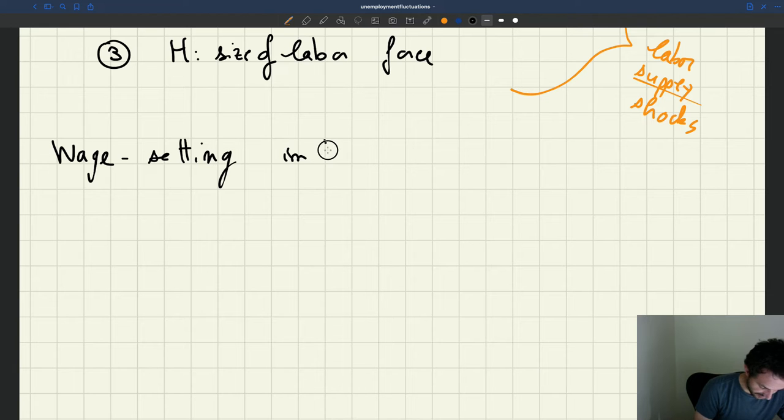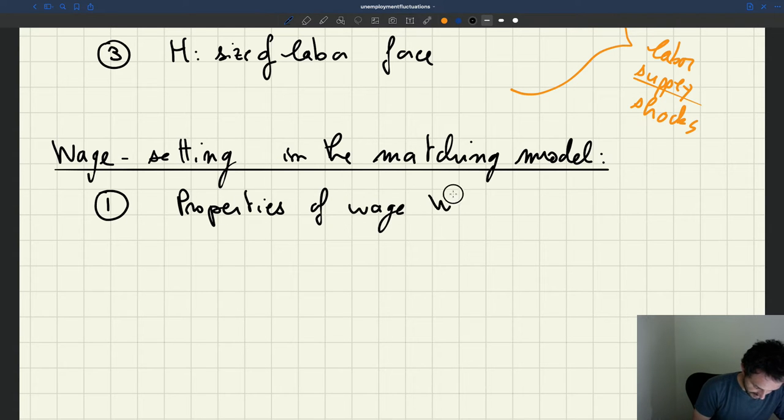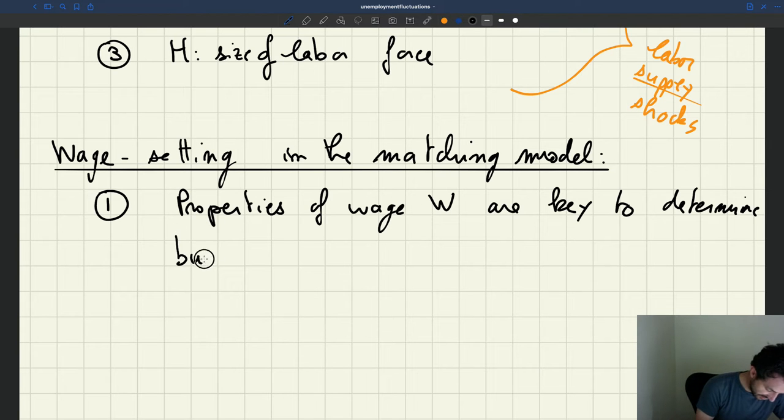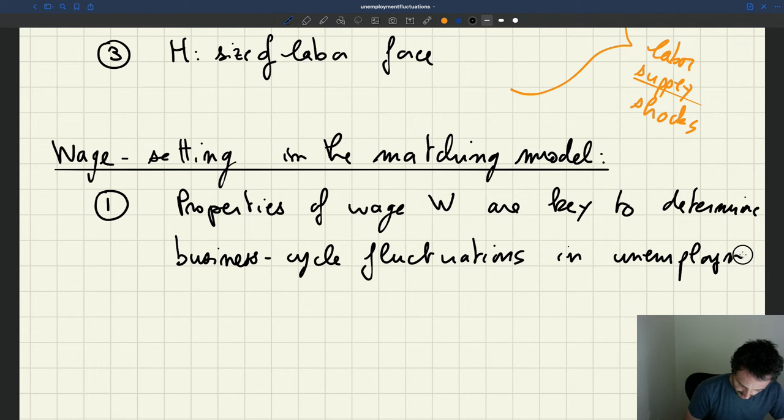What have we said about the wage setting in the matching model? So first of all, the thing that we've said is that the properties of the wage W are key to determine the business cycle fluctuations in unemployment and vacancies.